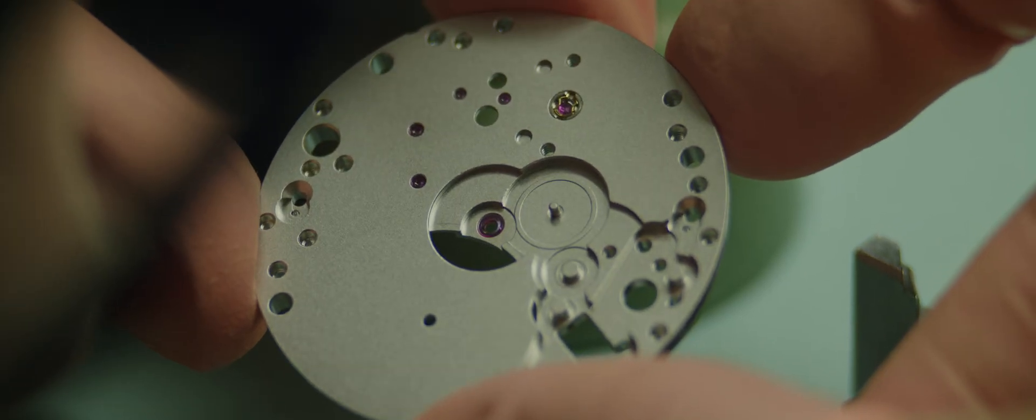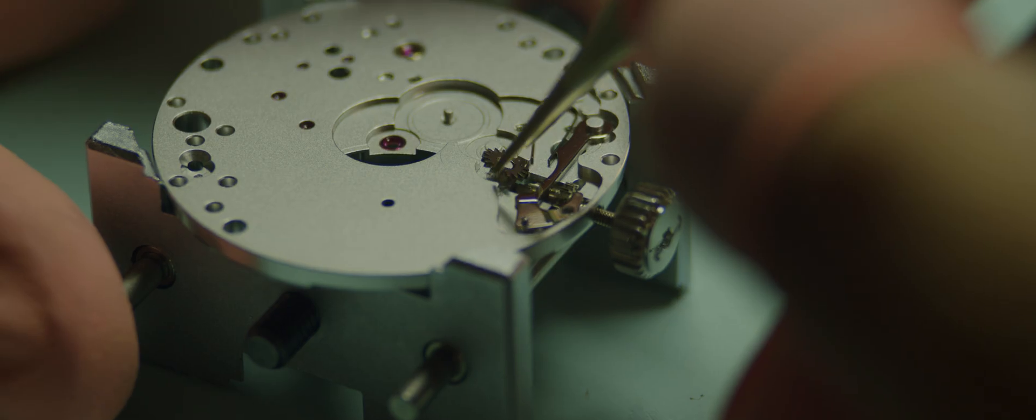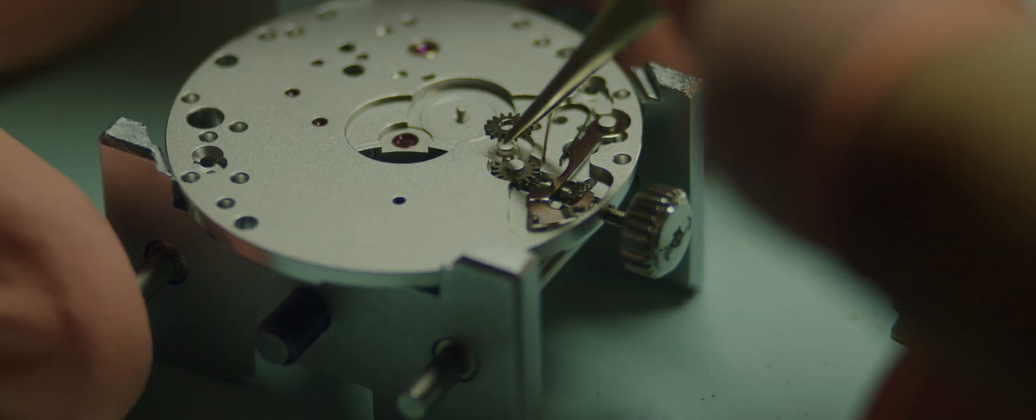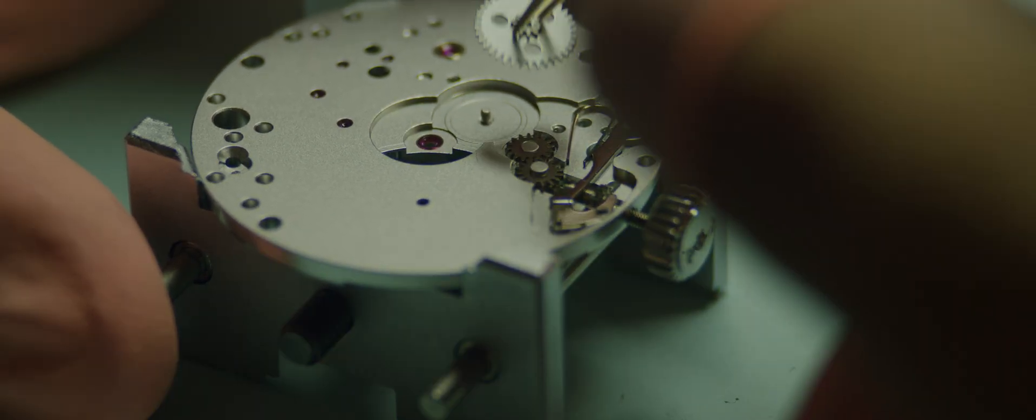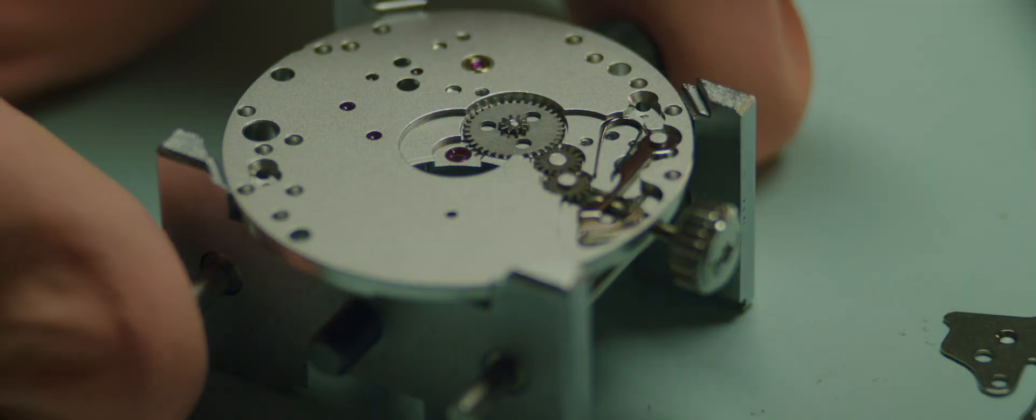And so one thing that is the main job of a watchmaker who is assembling a movement is to actually set up all the parts and pieces so that they interact properly with one another. Because from wheel to wheel, in a production run of watches, things will be slightly different.